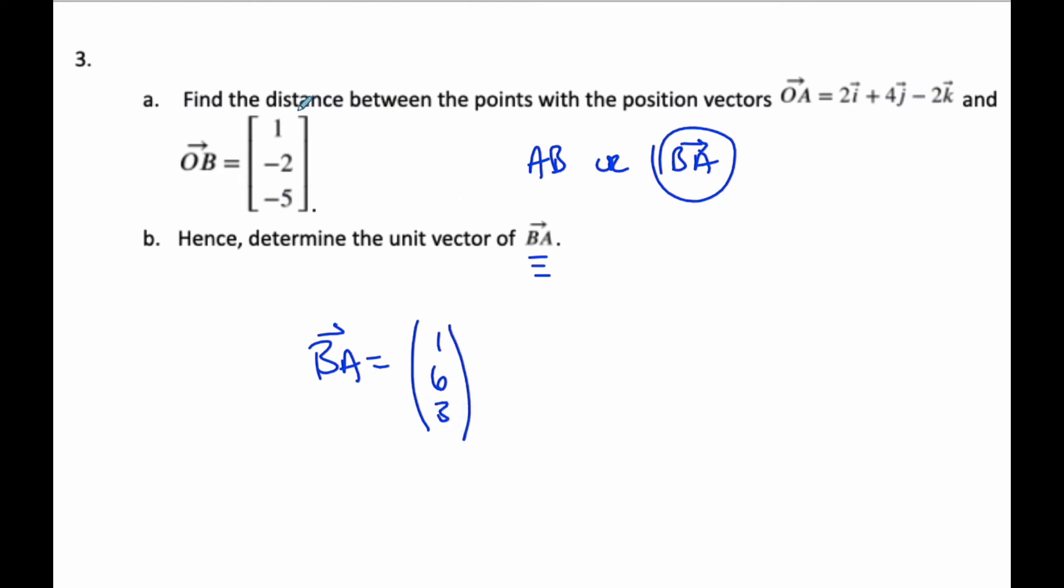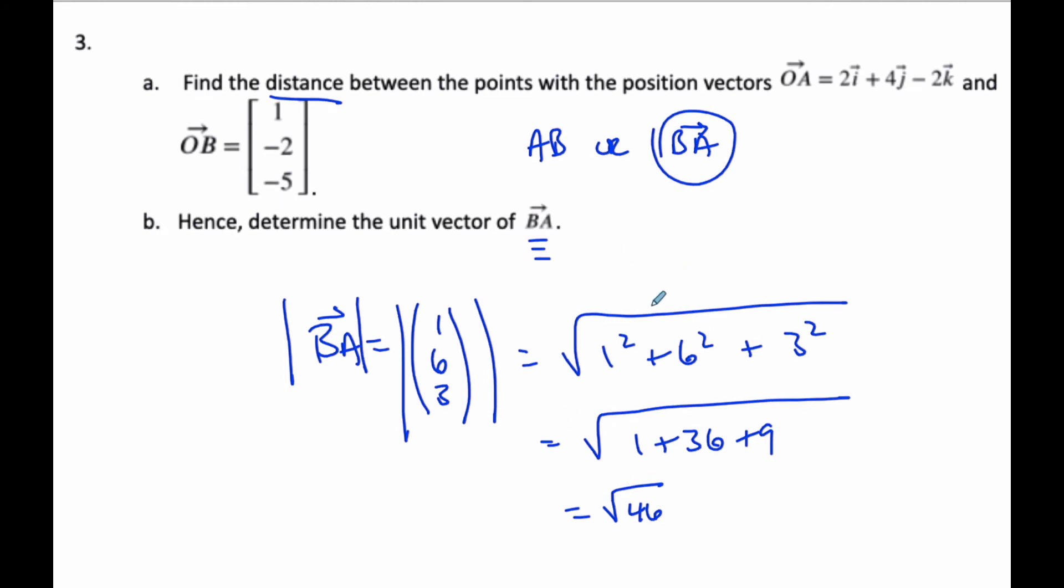And so I want to find the distance, that means I want to now find the magnitude of BA, which will be the square root of 1 squared plus 6 squared plus 3 squared, which is 1 plus 36 plus 9, which is the square root of 46. That is the distance between A and B.